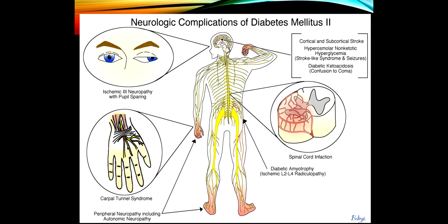Here's a slide showing the neurologic complications of diabetes: a pupil-sparing third nerve palsy; peripheral neuropathy, which frequently involves the autonomic nervous system causing orthostasis; carpal tunnel syndrome, which has a higher incidence in patients with diabetes; diabetic amyotrophy; infarction of the cord; infarction in the brain; and the two metabolic conditions — diabetic ketoacidosis and hyperosmolar non-ketotic hyperglycemia.